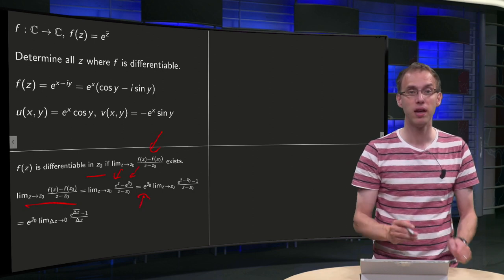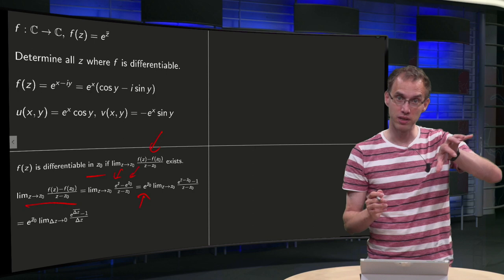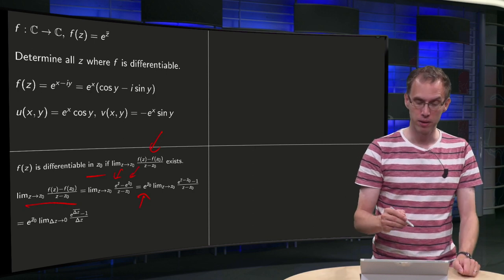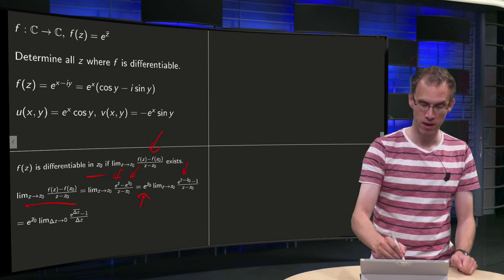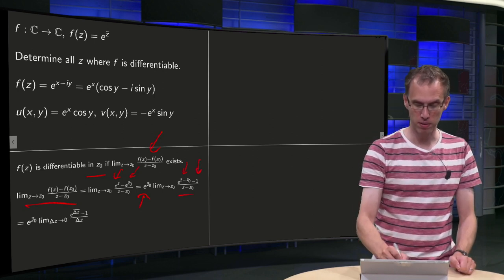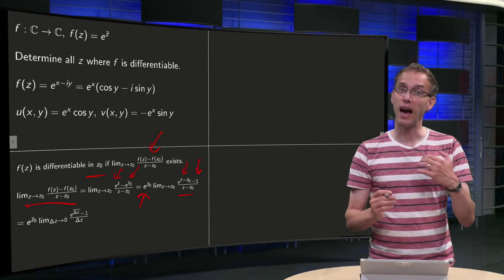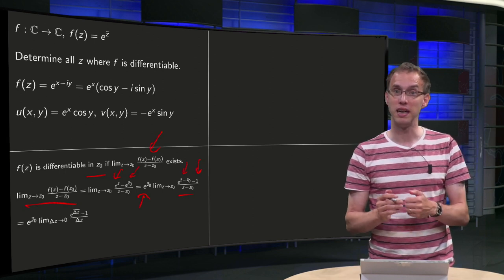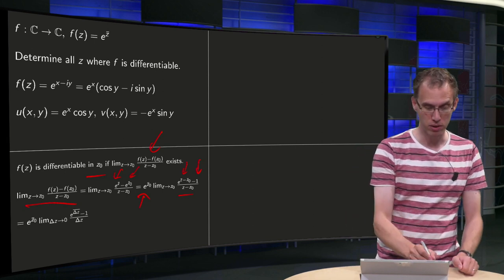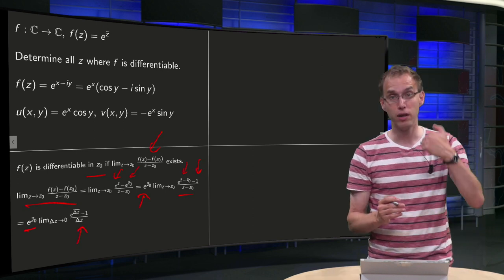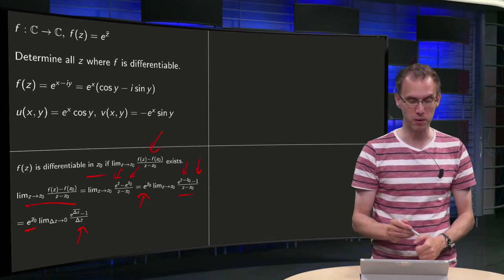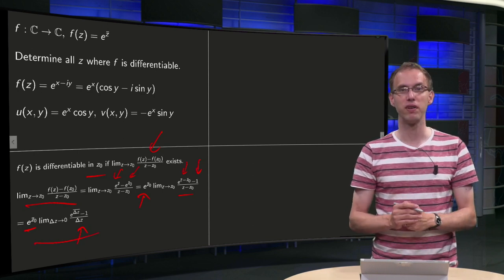There is no z in there, so you can take it in front. That simplifies it a bit, because then you have here e^(z̄ - z̄₀) minus one divided by z minus z₀. And then you can substitute Δz equals z minus z₀, so this one remains, here you get Δz, and in the numerator you get e^(Δz̄) minus one. And then we have this limit over here.